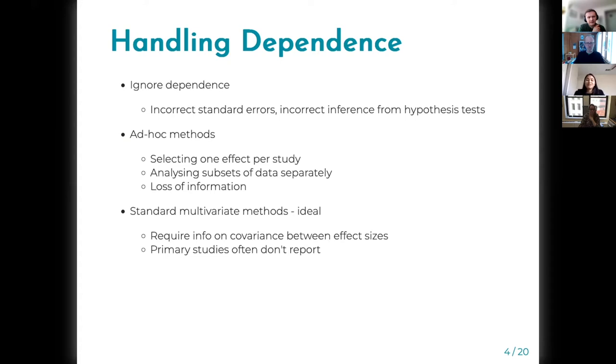The ideal method is to run multivariate models, but to run multivariate models you need information on the covariance or correlation between effect sizes, which is hard to gather from published studies.